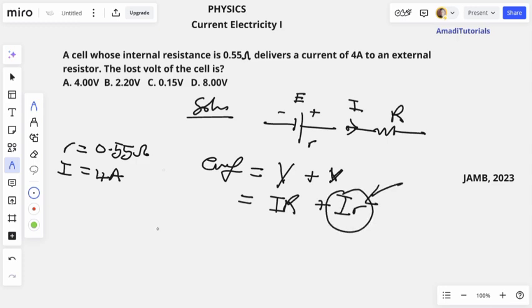I times r. So lost volt, small letter v, equals to I times small letter r, and that's what we have been given. So that would be 4 times 0.55, which will give us 2.20 volts. Option B. Thank you.